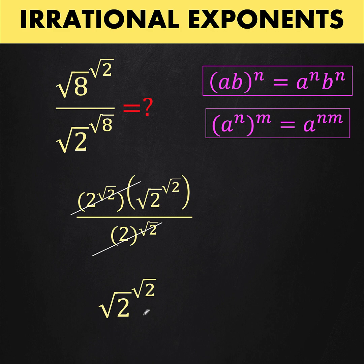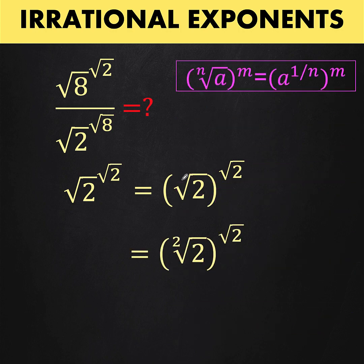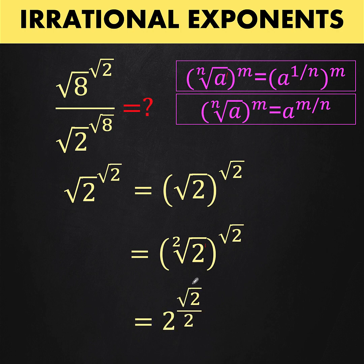We now have square root of 2 raised to square root of 2. To eliminate the radicals, we convert to fractional exponents. Recall that the square root of a, raised to an exponent m, can be rewritten as a raised to 1 over 2, all raised to m. Here, the base square root of 2 becomes 2 raised to 1 half, and multiplying 1 half by square root of 2 gives us square root of 2 over 2. So the expression simplifies to 2 raised to the power of square root of 2 over 2.